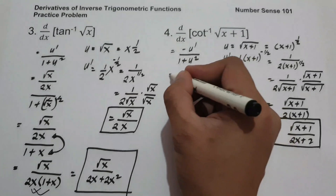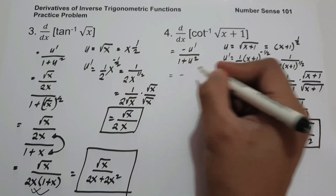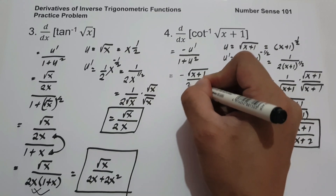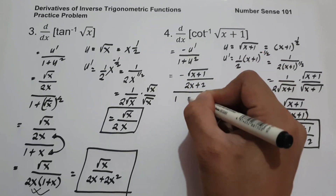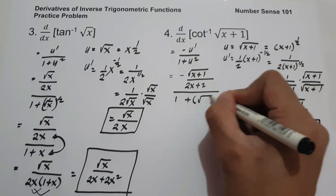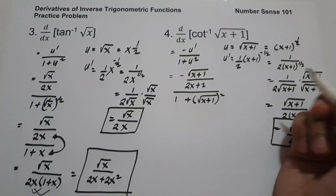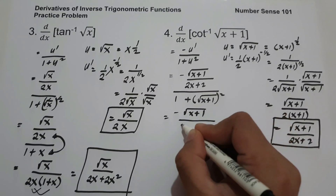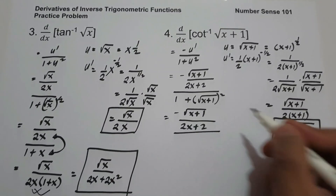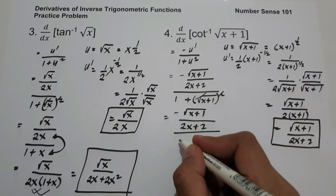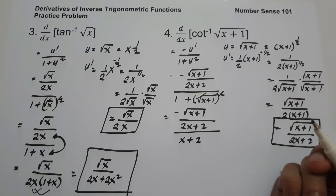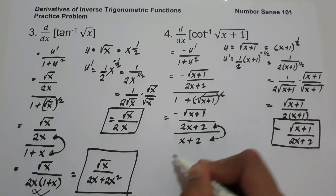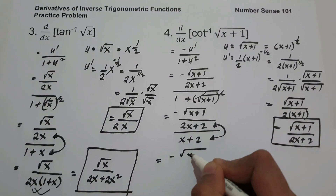Now substituting into the formula, we have negative u prime, that is square root of x plus 1 over 2x plus 2, divided by 1 plus u squared, where u squared is square root of x plus 1 squared, which equals x plus 1. Simplifying 1 plus x plus 1 gives x plus 2. Therefore we multiply 2x plus 2 and x plus 2 in the denominator.